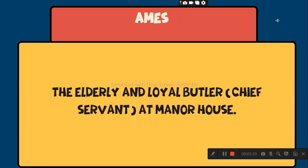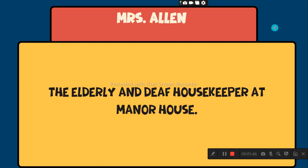Ains is the elderly and loyal butler, chief servant at Manor House. Mrs. Ellen is the elderly and deaf housekeeper at Manor House.